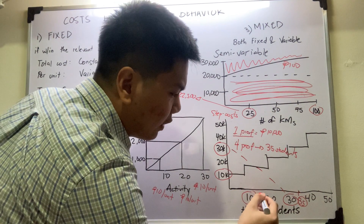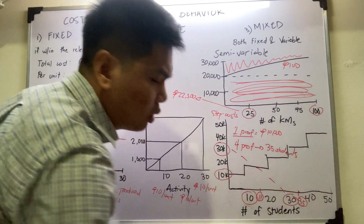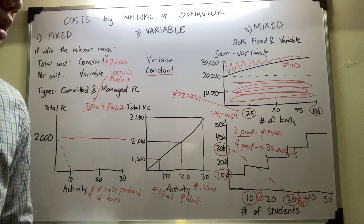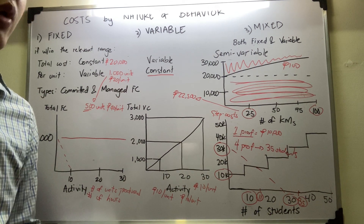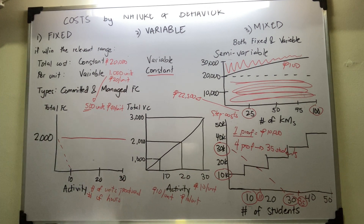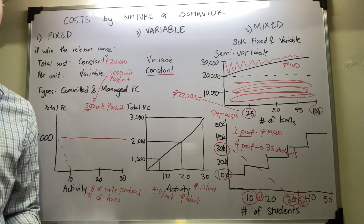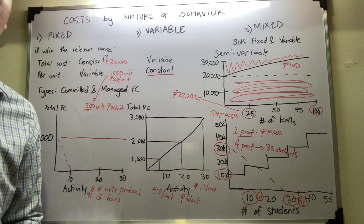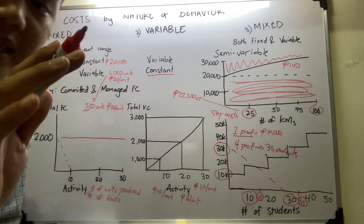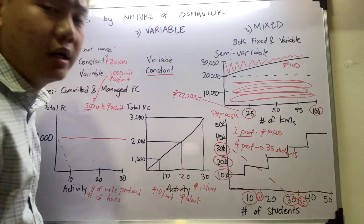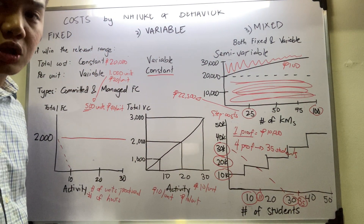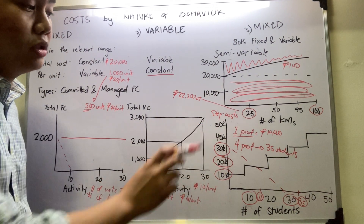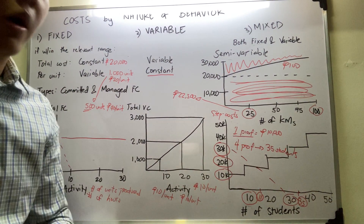If there are only 11 students who enroll, is it okay to hire just one professor? The company policy is that one professor can handle only 10 students at the maximum. So what happens is that I'm forced to hire two professors, giving them 10,000 each, for a total salary of 20,000 pesos to accommodate 11 students.